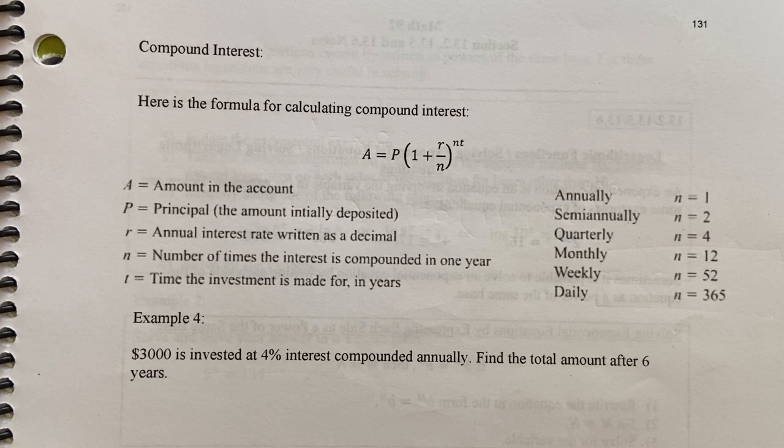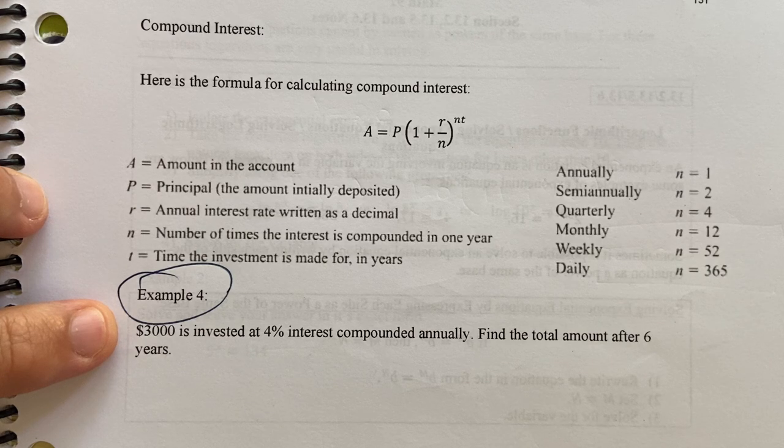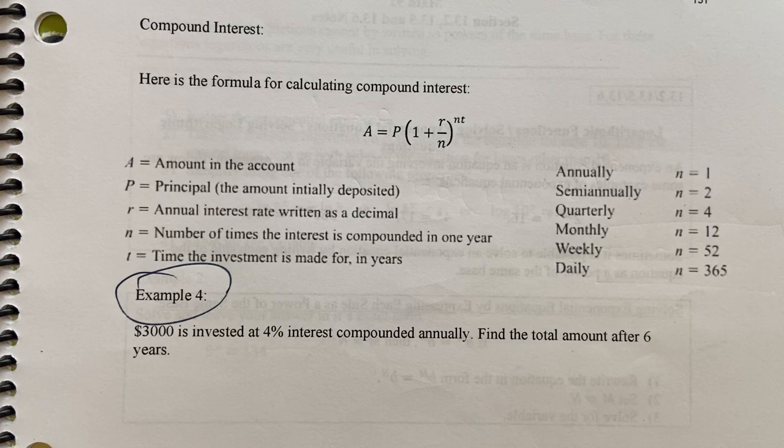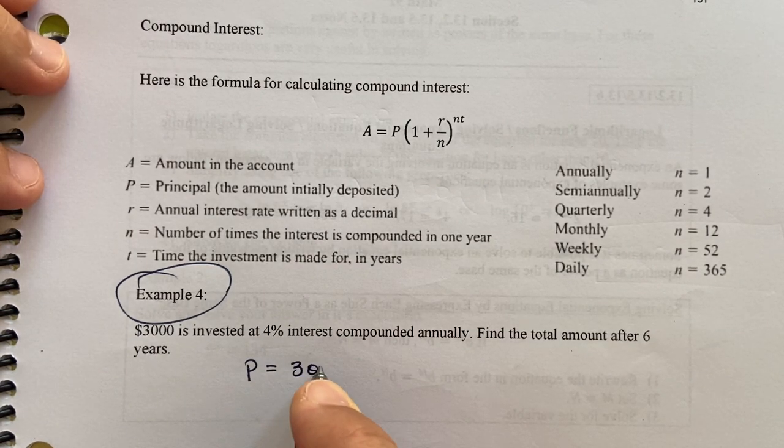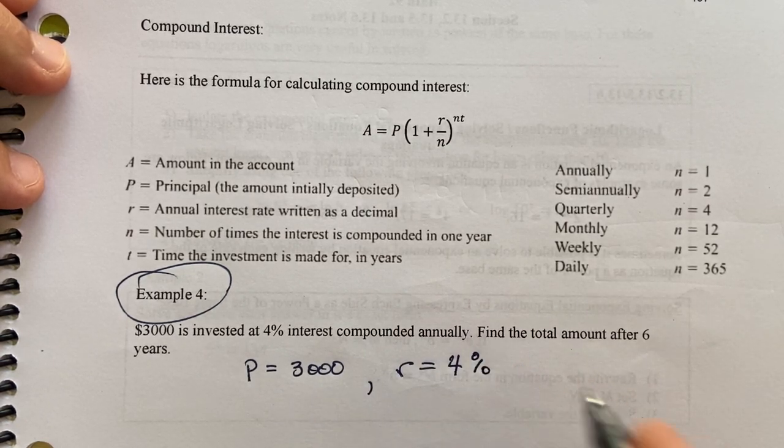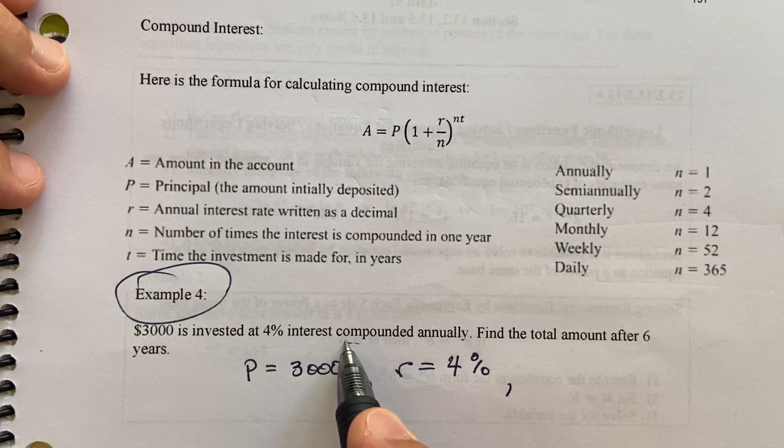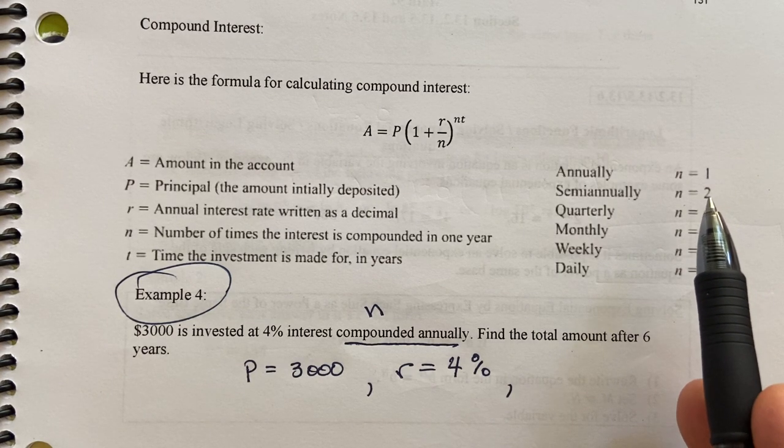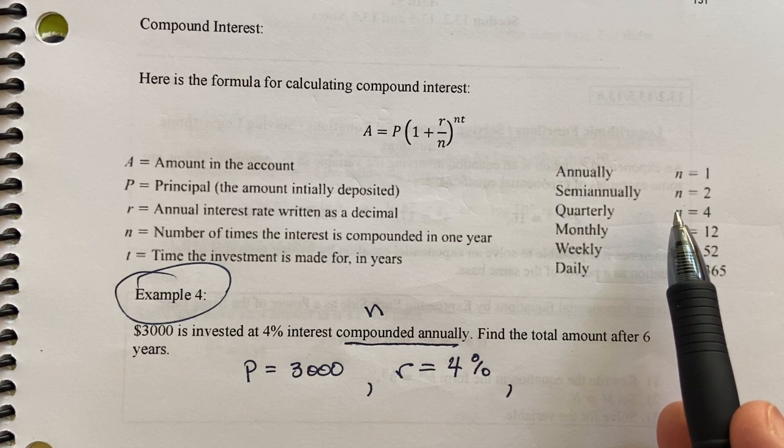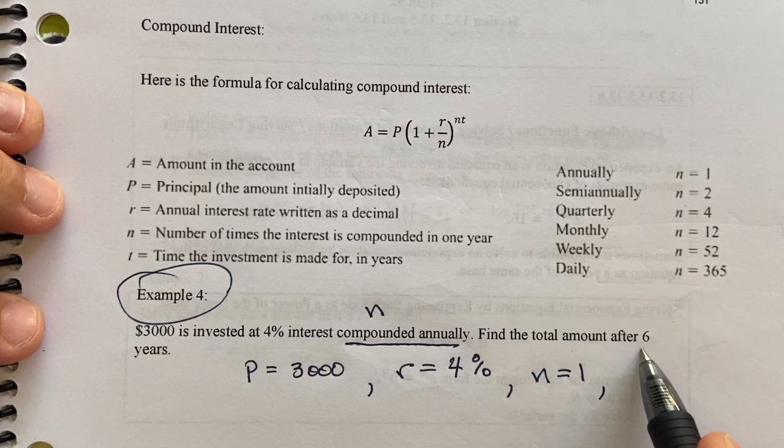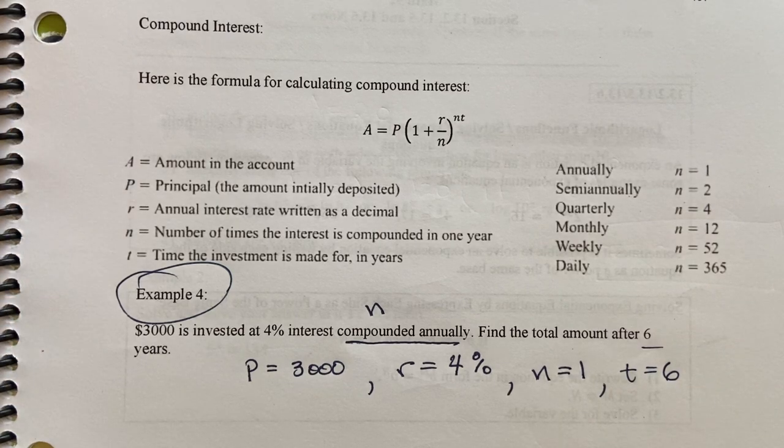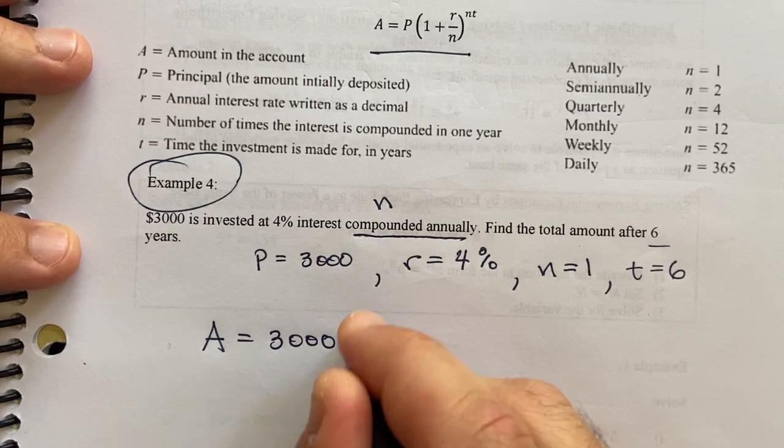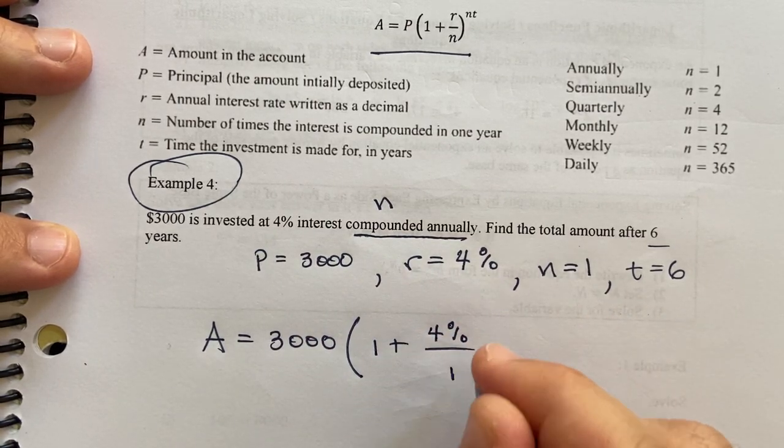So for this first one, it says $3,000 is invested at 4% interest compounded annually. Find the total amount after six years. So P would be 3,000. R would be 4% and we do need the percent symbol. Compounded annually is a way of telling us N. N equals one because annually means once in a year. N is a measure of how many compounding periods are affected in a year. So N would be one, and T equals six years. So A equals 3,000 times 1 plus 4% over 1 raised to the 1 times 6.